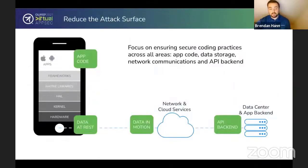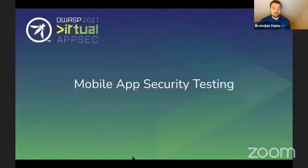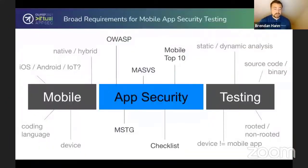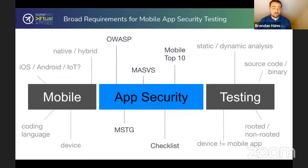One of the first steps NowSecure recommends is reducing your actual attack surface. You should be looking to write secure code from the start, protect data at rest and in motion, and inspect your API backends to get visibility into potential insecurities. Mobile app security testing is a loaded term. It starts with understanding security requirements — this is where OWASP has created the MASVS, the MSTG, the Mobile Top 10, and checklists, so you can understand what threats you really need to address.